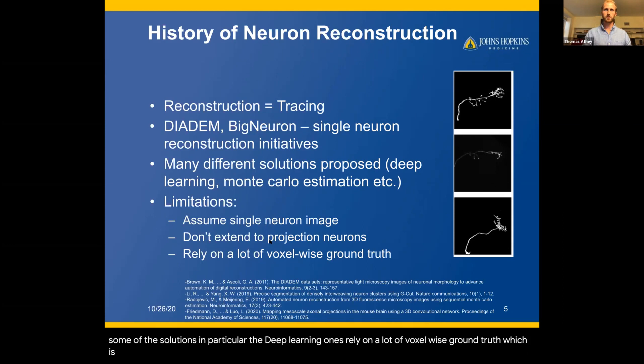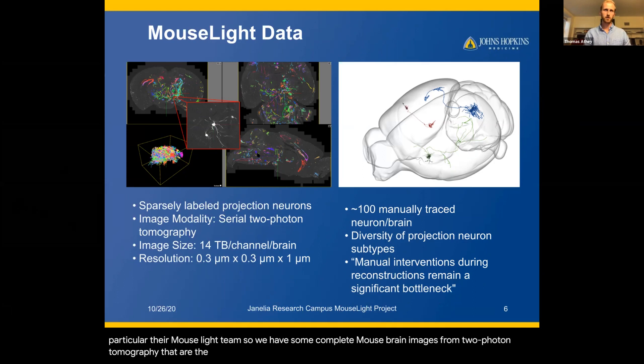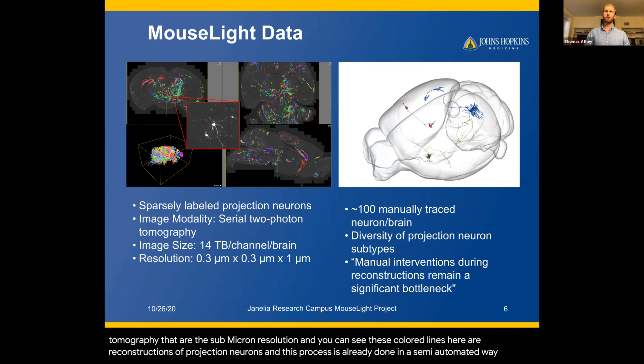The data we're working with comes from the Janelia Research Campus, in particular their MouseLight team. We have complete mouse brain images from two-photon tomography at submicron resolution. The colored lines are reconstructions of projection neurons, and this process is already done in a semi-automated way. However, it's still the bottleneck in producing these datasets, so my research is into making this more efficient.